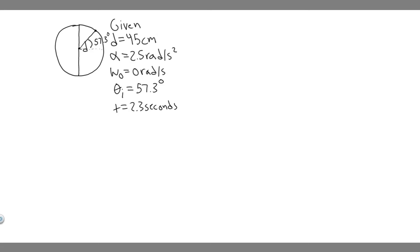In this problem, we're told a 45 centimeter diameter disc rotates with a constant angular acceleration of 2.5 radians per second squared. It starts from rest at t equals zero, and a line drawn from the center of the disc to a point P on the rim makes an angle of 57.3 degrees with the positive x-axis at this time. At t equals 2.3 seconds, find: a) the angular speed of the wheel, b) the linear speed and tangential acceleration of P, and c) the position of P in degrees with respect to the positive x-axis.